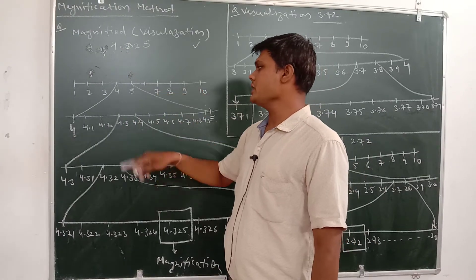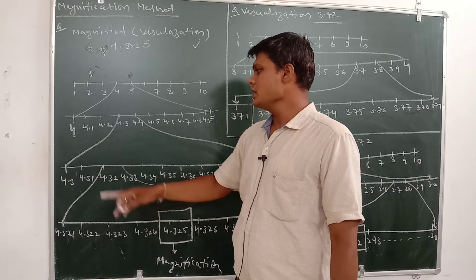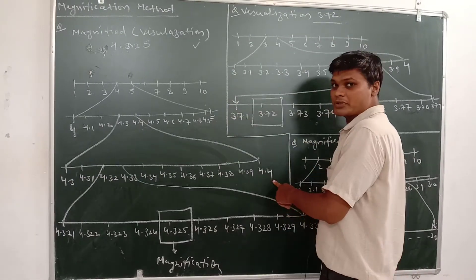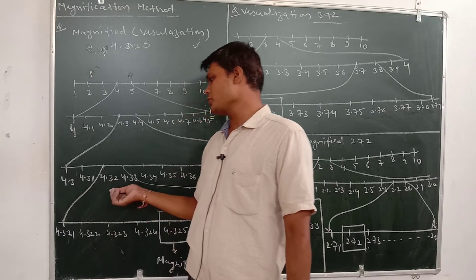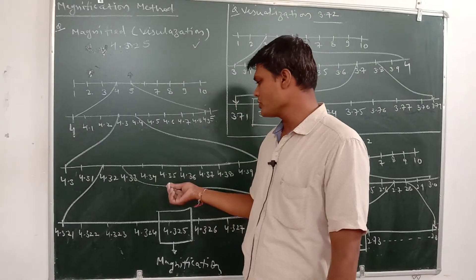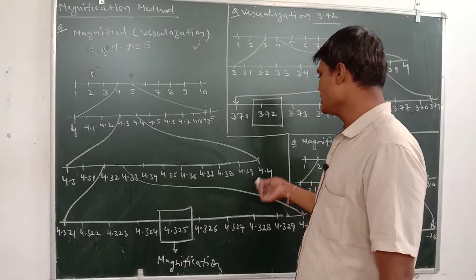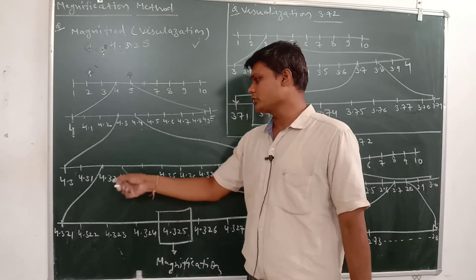Now if you need 4.32, where will 4.32 come? It will come between 4.3 and 4.4. That means one digit became 4.3 and the last digit is 4.4. So here: 4.31, 4.32, 4.33, 4.35, 4.36, 4.37, 4.38, 4.39, and 4.4.